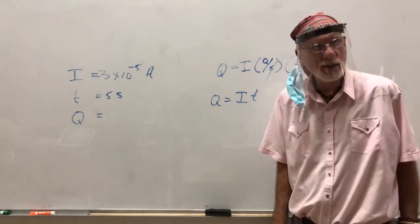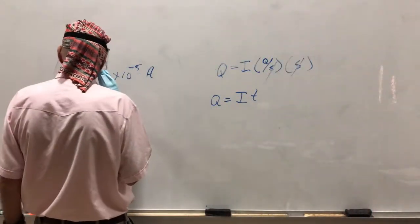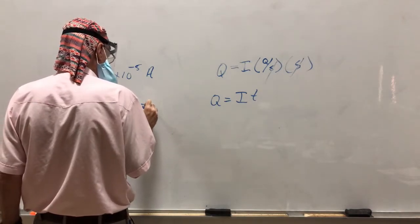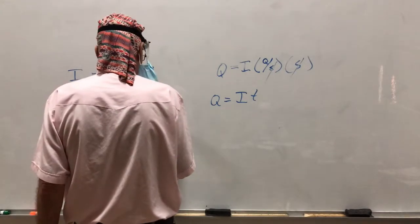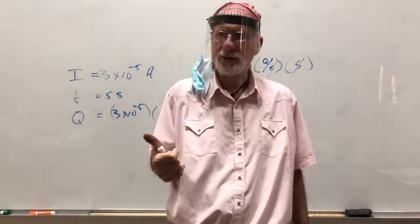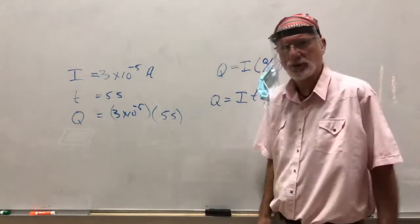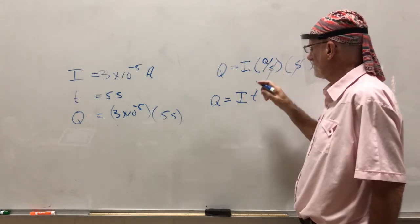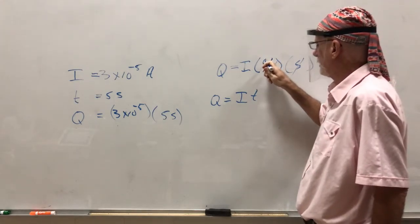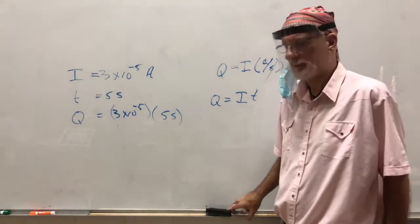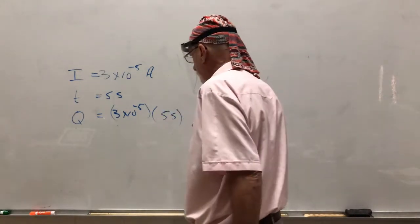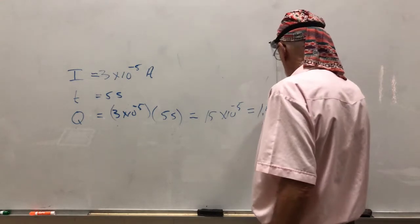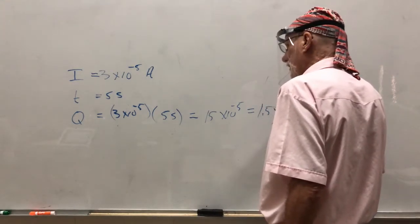So what is the charge going to equal? The current, which is 3×10^-5, we'll leave off the unit labels, times five seconds. Amps is an SI measure, so you're good. You check your SI measures, make sure everything is okay. Hour is not an SI measure, seconds is. You have seconds, you have charge, coulombs. This is actually coulombs per second, right? Charge. So this is going to be 15×10^-5, which equals 1.5×10^-4, and that's going to be coulombs.